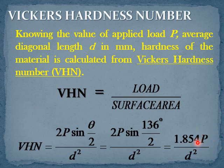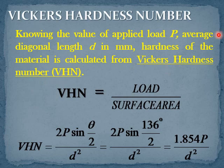Knowing the applied load P and average diagonal length d, the hardness of the material is calculated from the Vickers hardness number.